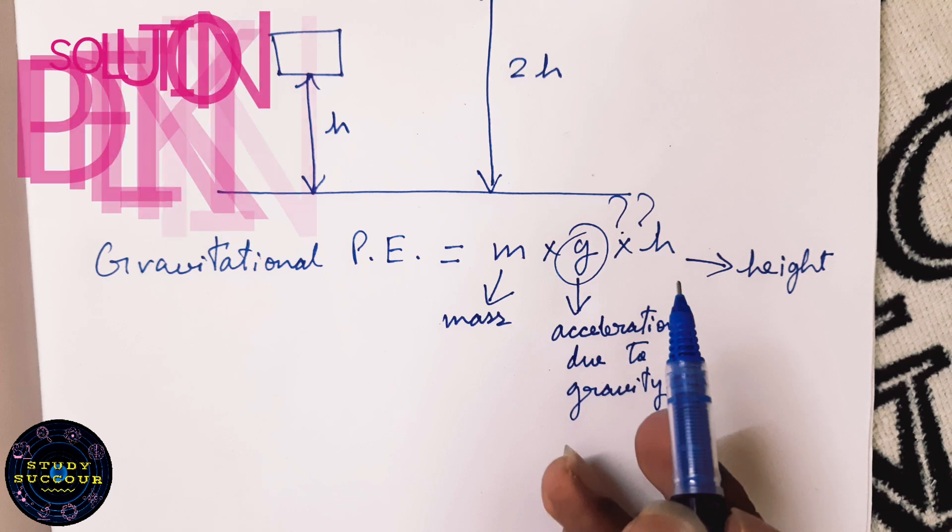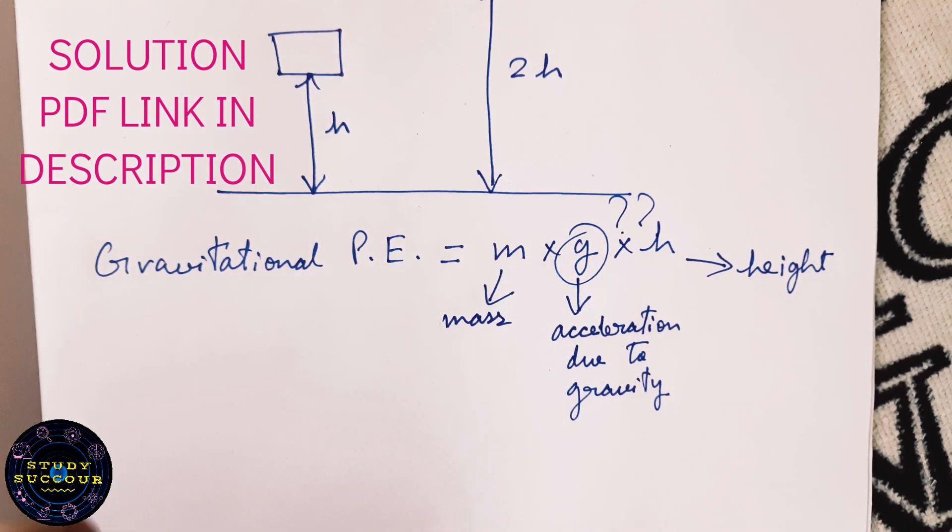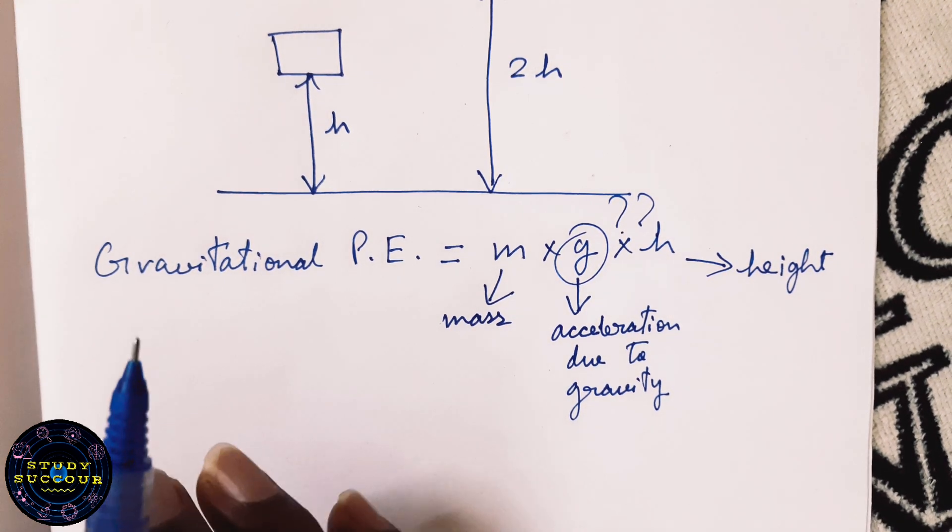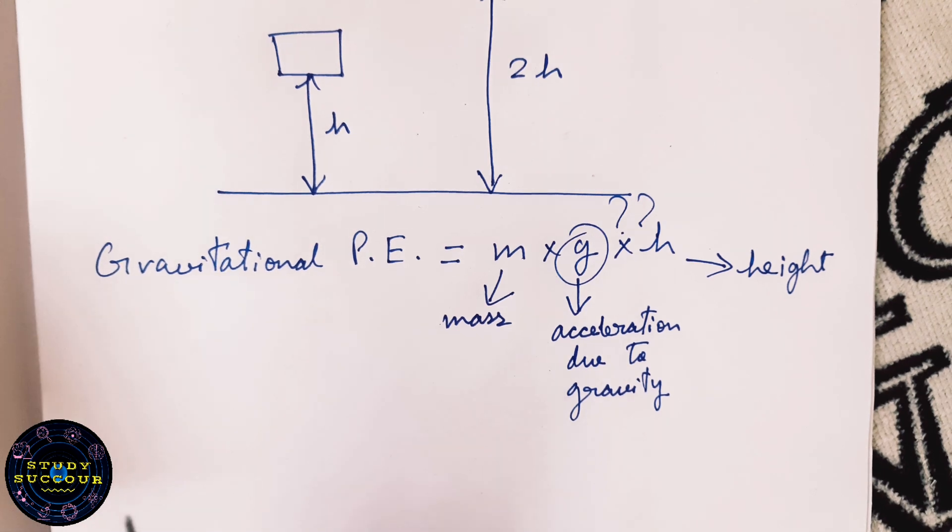The G or the acceleration due to gravity has a constant value that means it is approximately same for all the bodies. Hence we will write this as G for both the bodies. Ok,